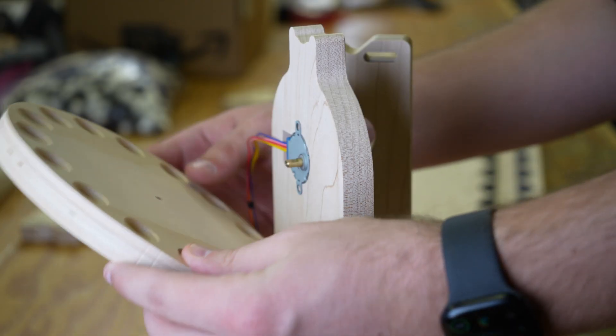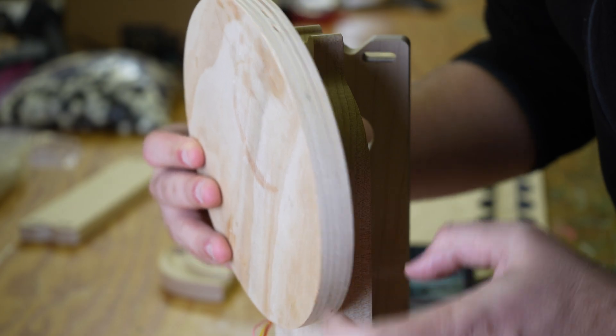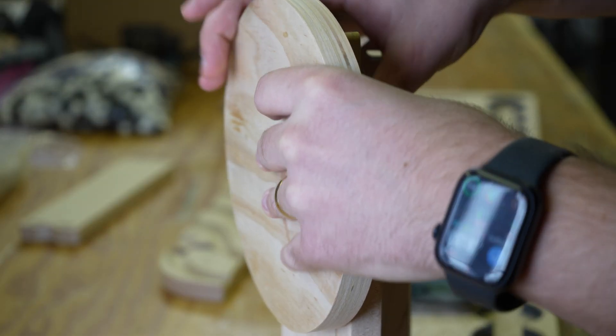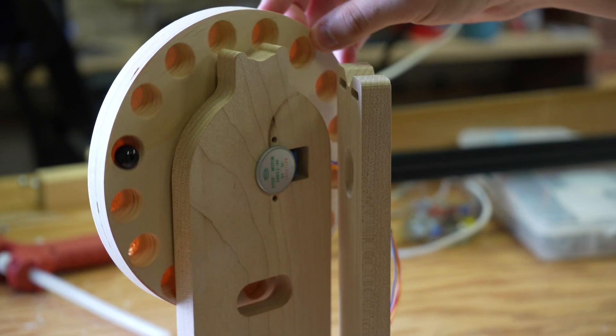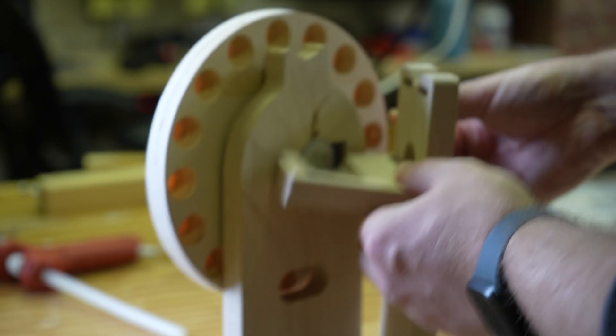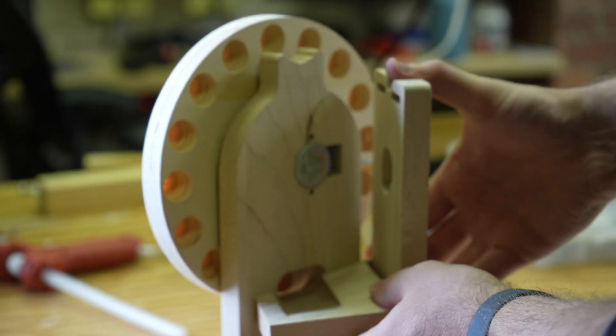I tried to keep the wheel simple. It just friction fits onto the shaft of the stepper motor and I verified that the stepper can provide enough torque to actually lift marbles with the wheel. That was pretty concerning because these steppers don't have too much torque.